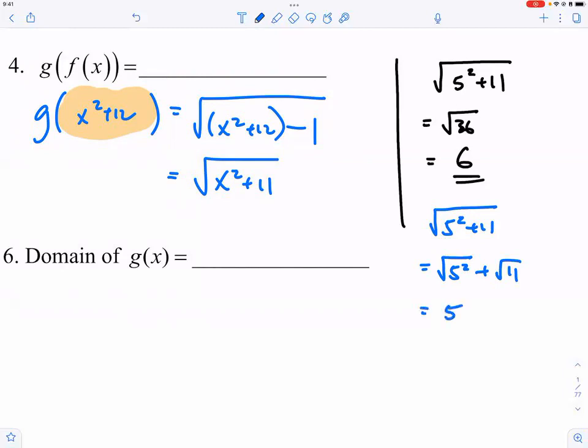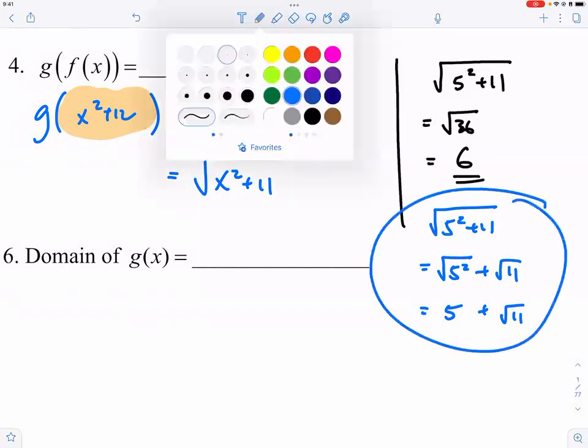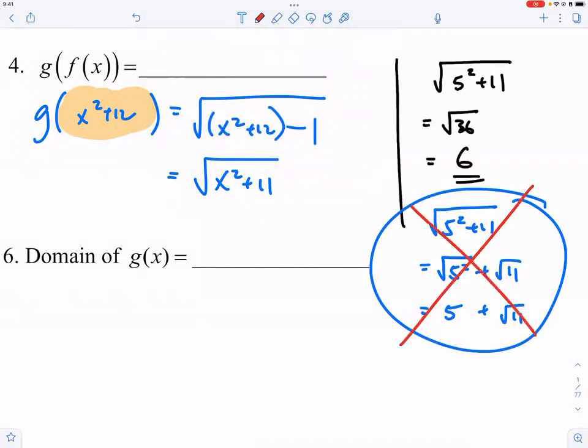Well, that becomes five. That becomes square root of eleven. And what is square root of eleven? Around three point something-ish.